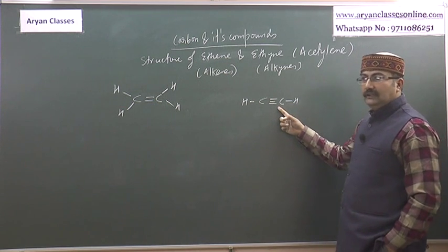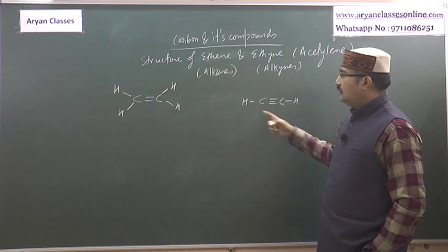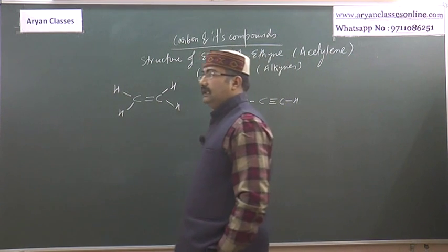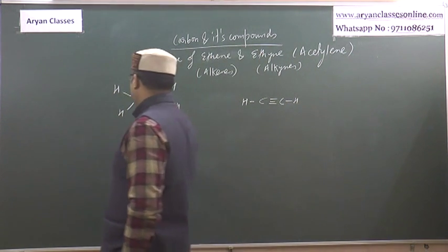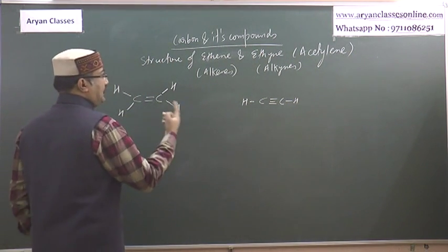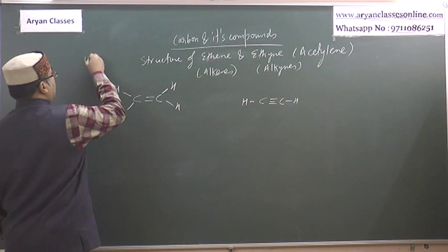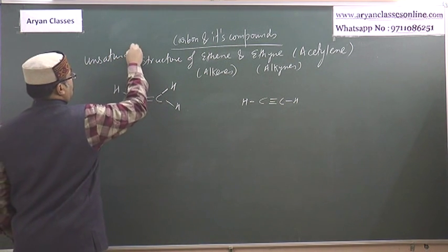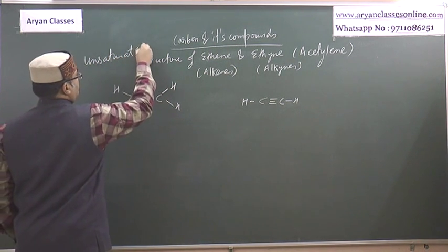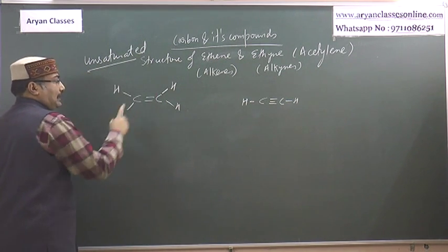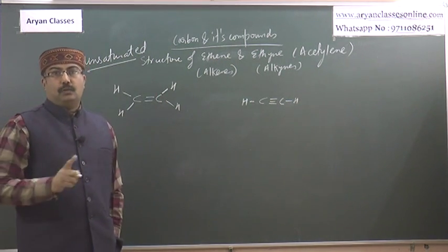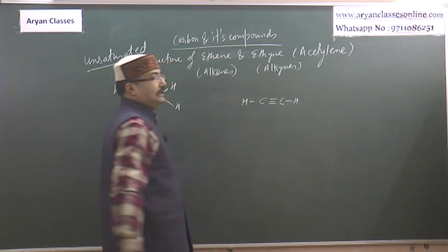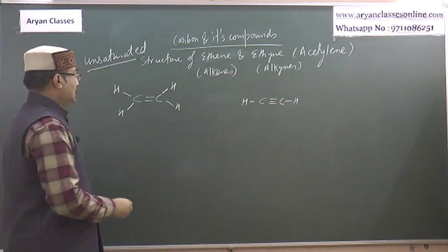In ethyne there must be a triple bond, and in alkenes there must be a double bond. In any compound, if between carbon and carbon there is even one double bond or triple bond, then it is called unsaturated. Carbon-carbon ke bich mein if there is one double bond minimum or triple bond, then it is known as unsaturated.